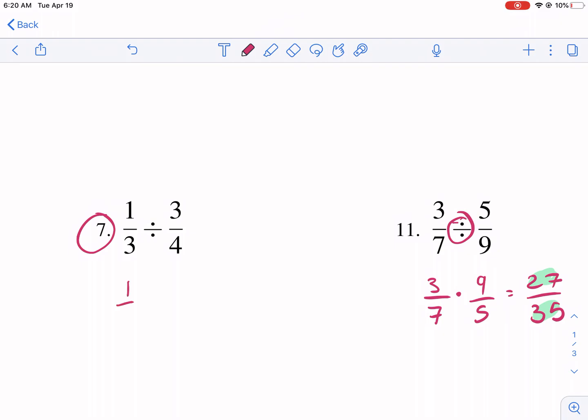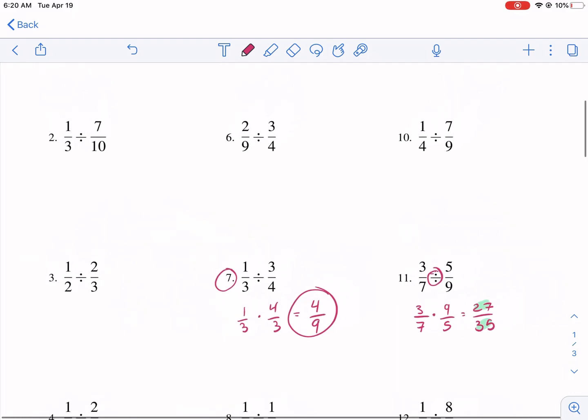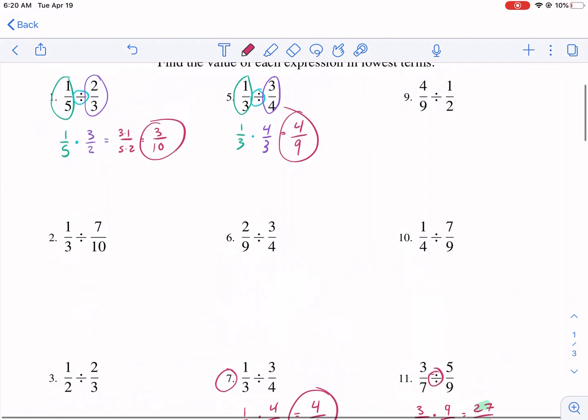Let's just do one more. To be thorough, 1/3 times 4/3. And we get 4/9, and that's going to be our answer. So pretty simple process. Dividing fractions, really not that bad.